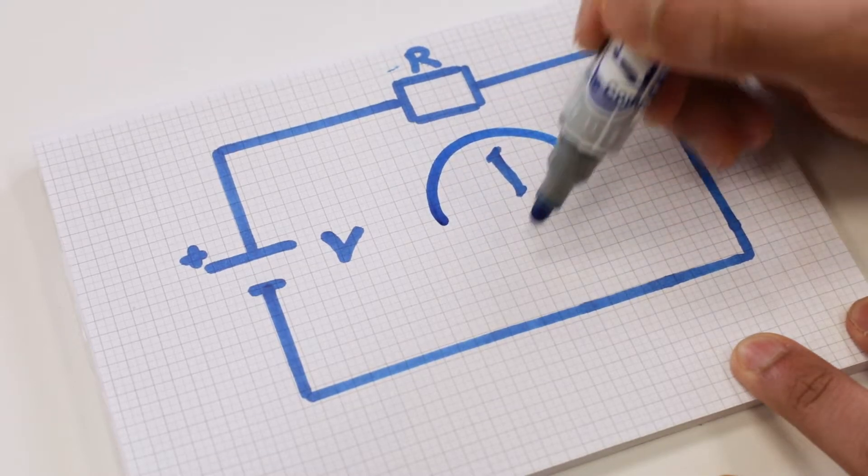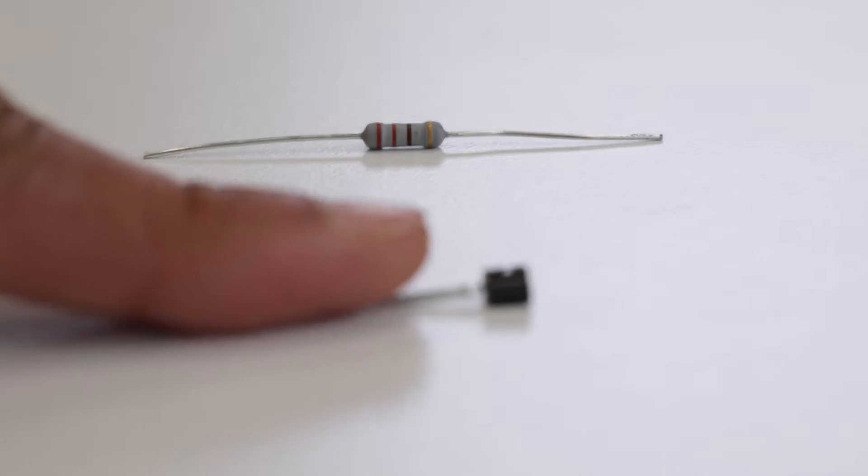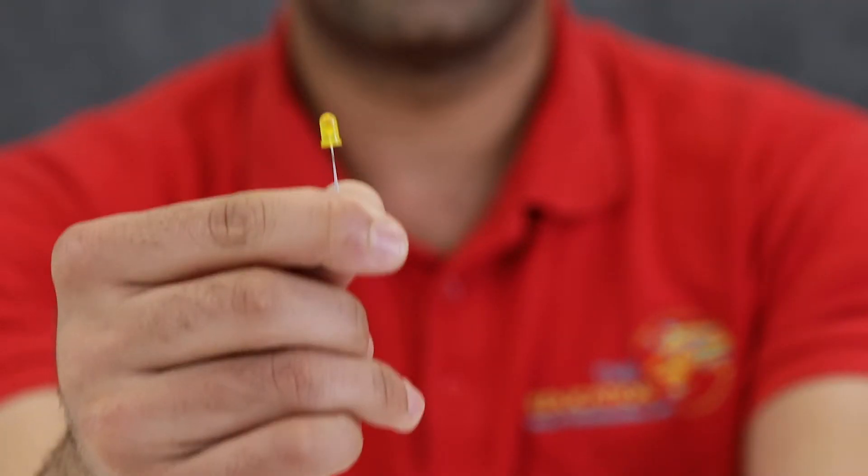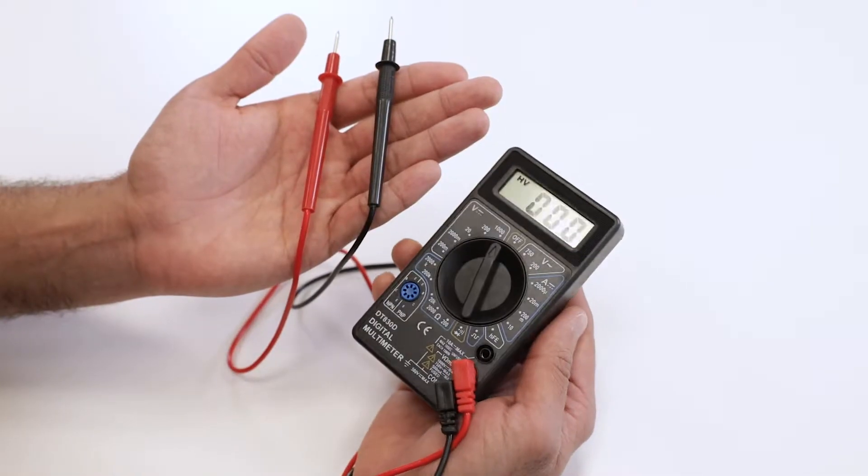As a beginner to electronics and physics, you may have many questions and need clear answers. For instance, what's the direction of the current in the circuit? What's the difference between the resistor and the transistor? Why is this LED yellow and this one blue? And how do you use the multimeter?